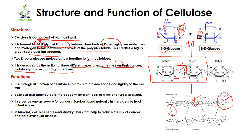The biological function of cellulose in plants is to provide shape and rigidity to the cell wall. Because of cellulose we can see long trees, rigid structures, and compact structures of leaves. Cellulose also contributes to the capacity of plant cells to withstand turgor pressure — the water pressure exerted on the walls of the cell. Because cellulose is present in the cell wall it withstands this pressure; without it, cells may burst.